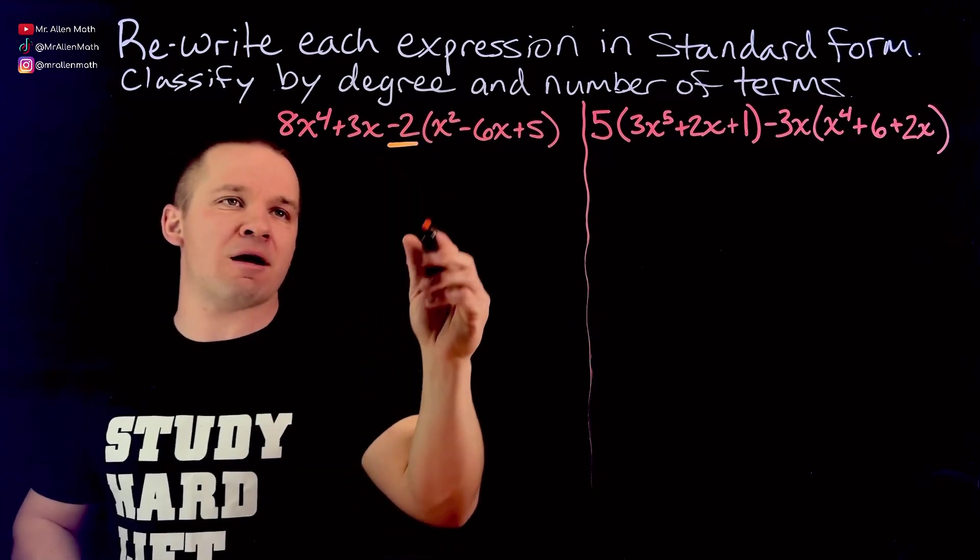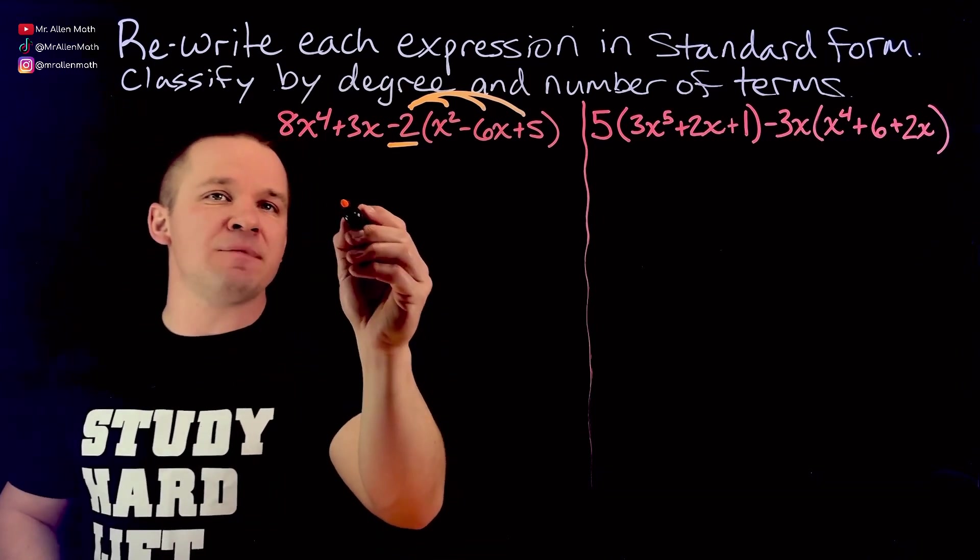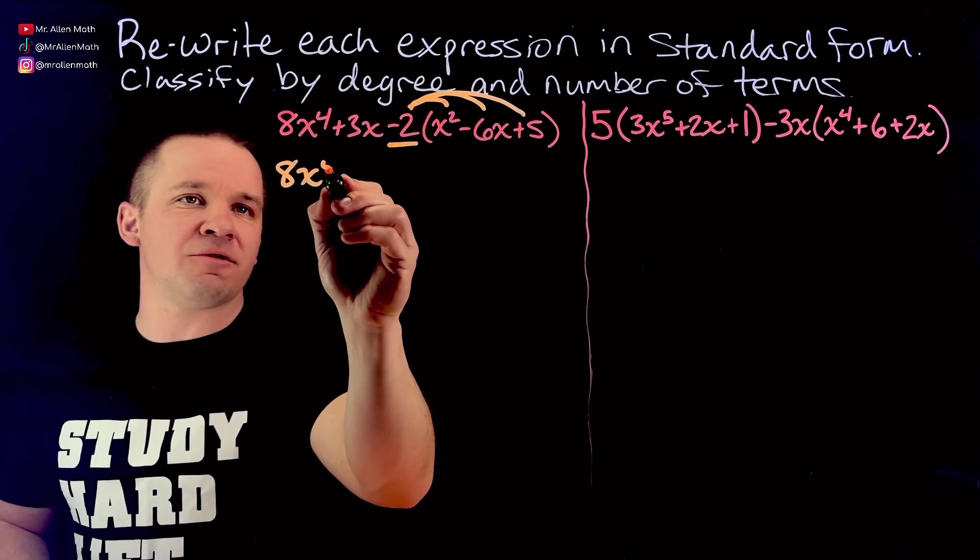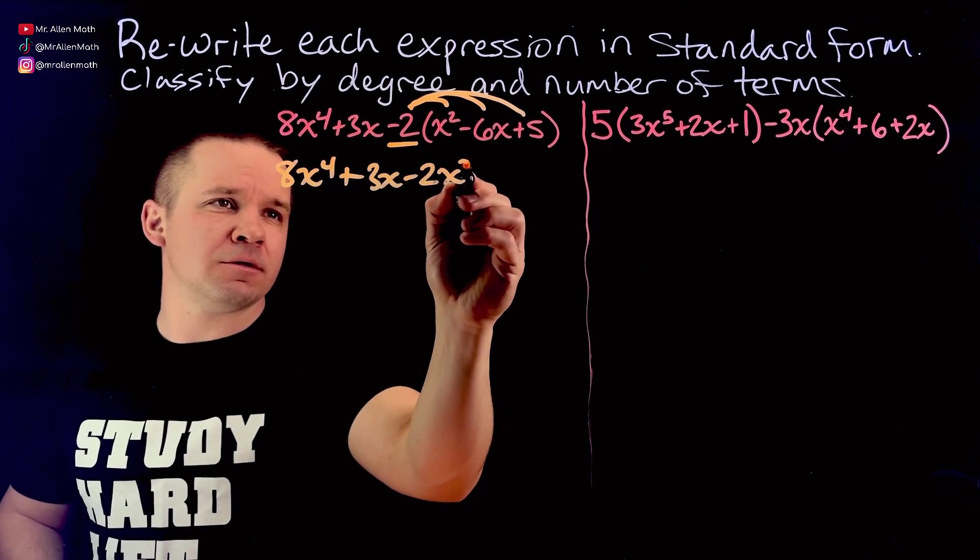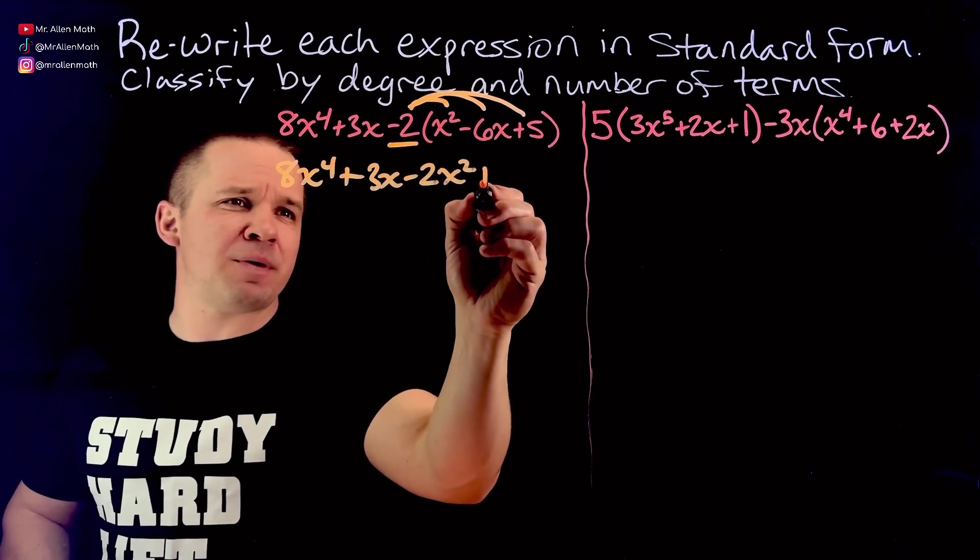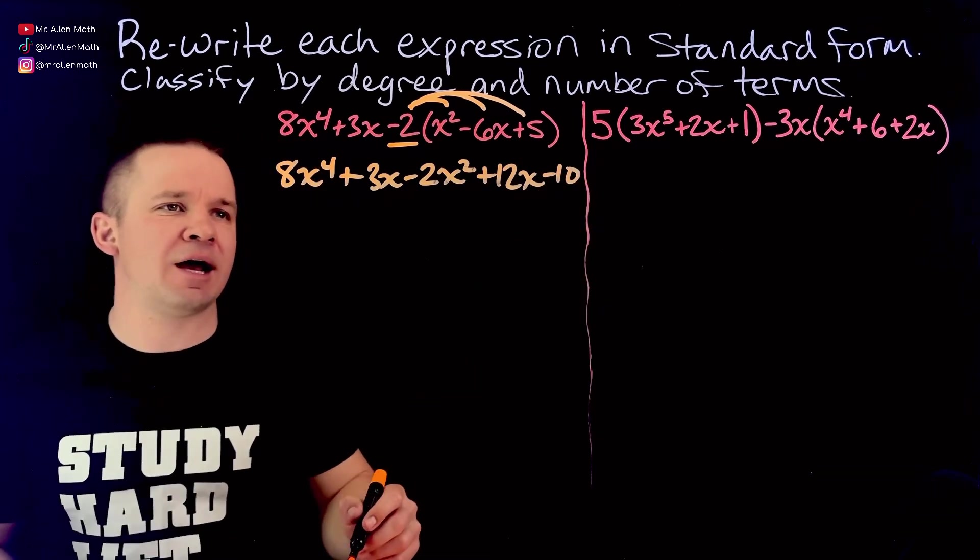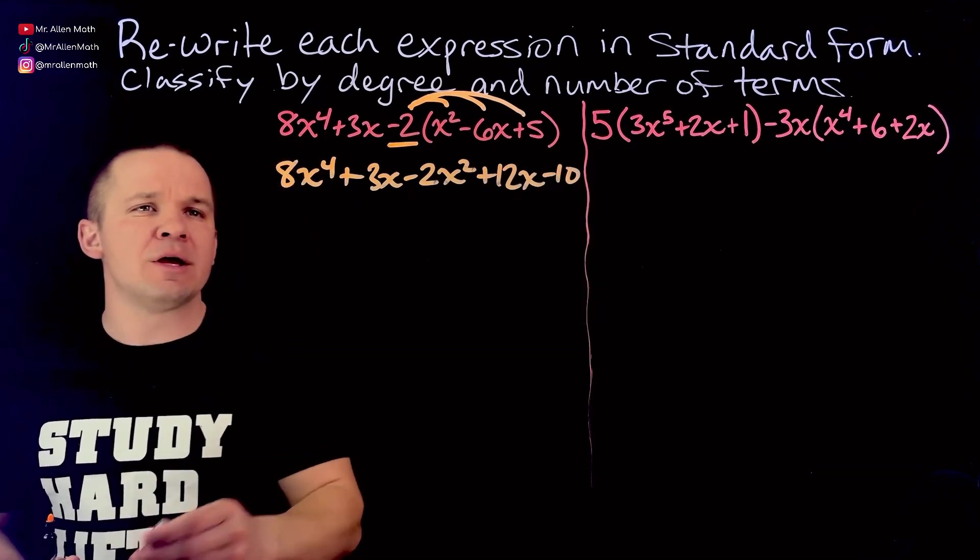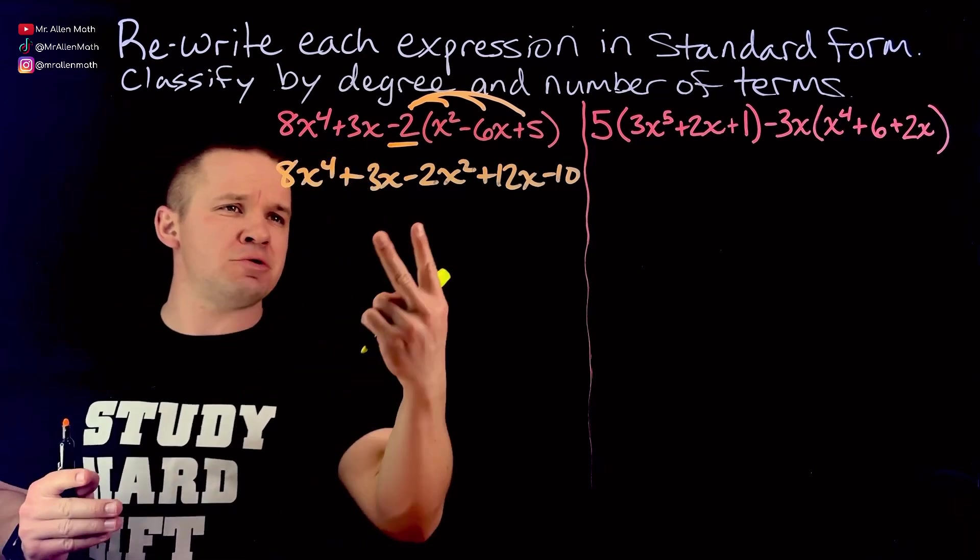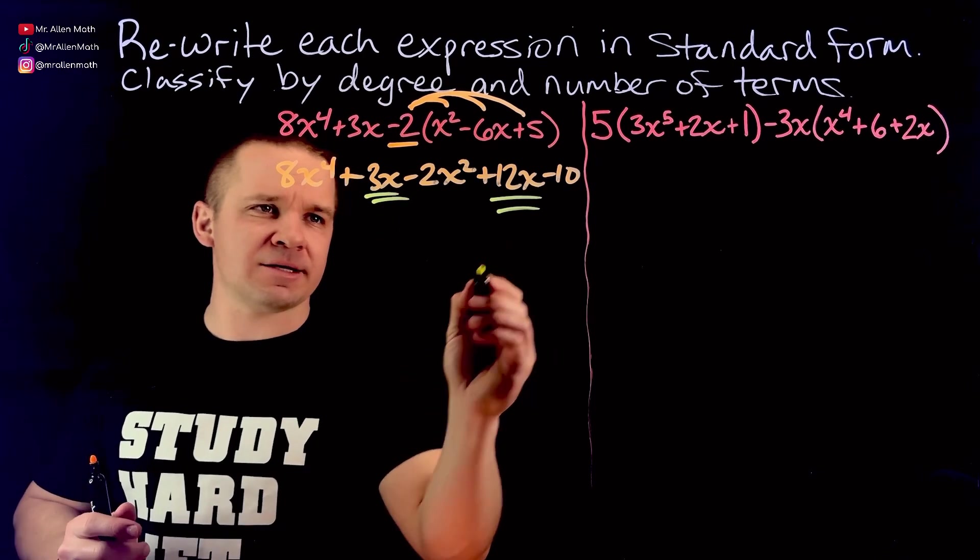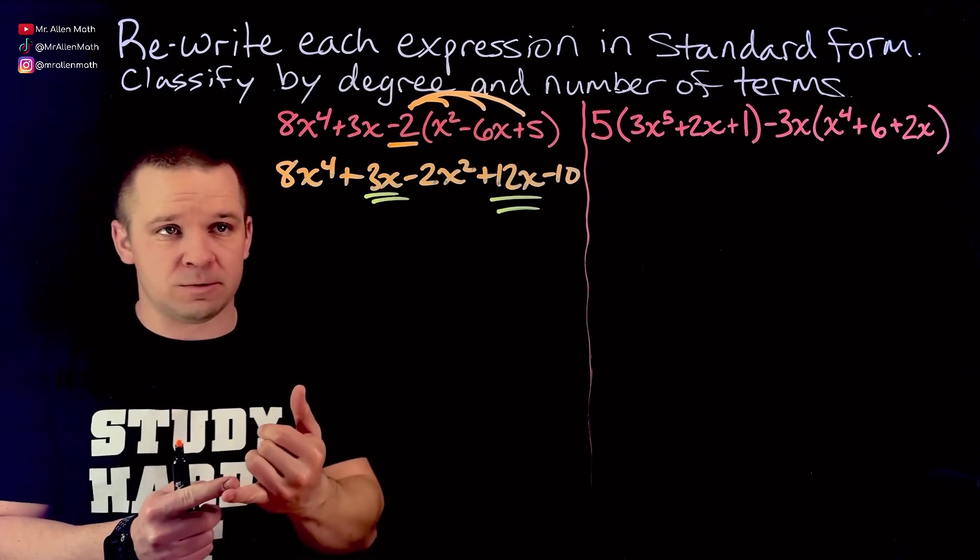So first example here I've got 8x to the fourth plus 3x minus 2 all times the x squared minus 6x plus 5. So what's our first step here? I need to distribute this negative 2 here. Just the negative 2, even if this was a like term we can't subtract them because it's multiplication right there and multiplication comes first.